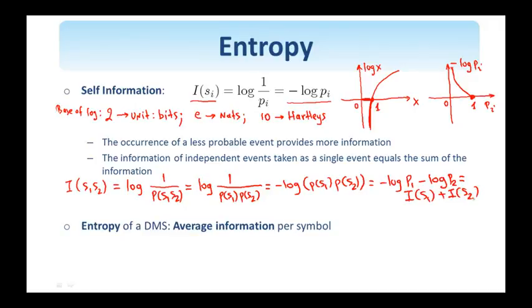So, for the source S, we'll denote its entropy as H(S), and then we use the definition of the expected value or the average of self-information, p_i, the self-information of symbol s_i,